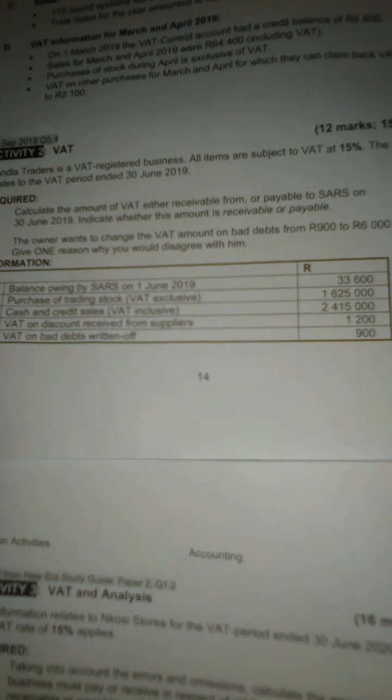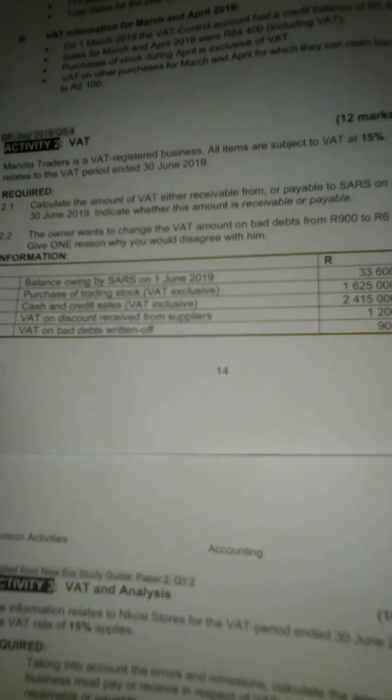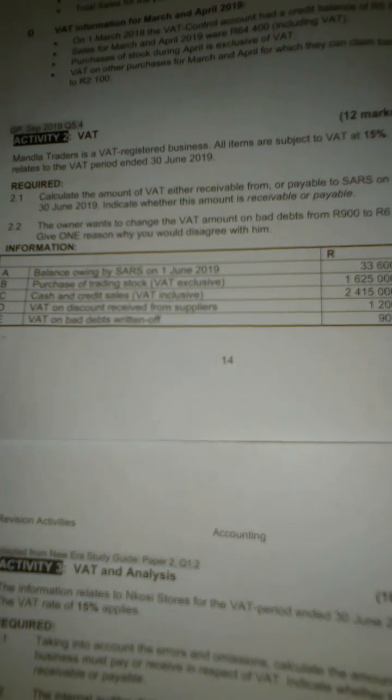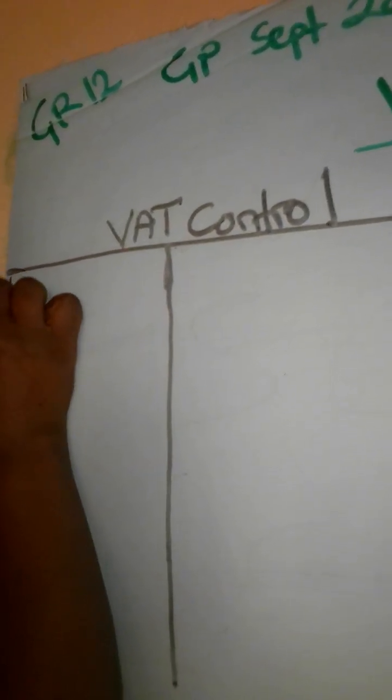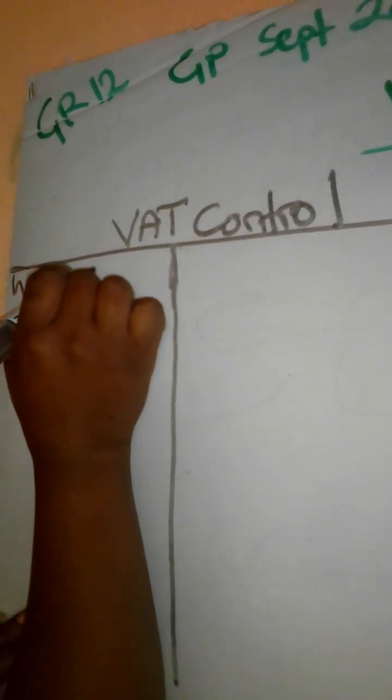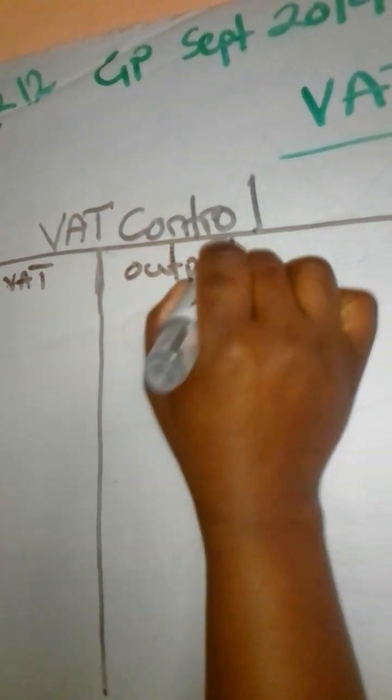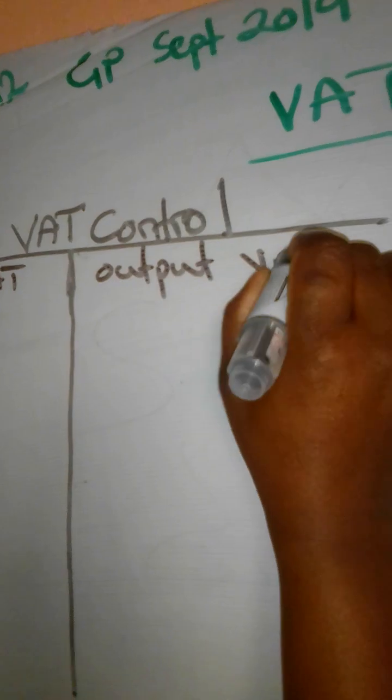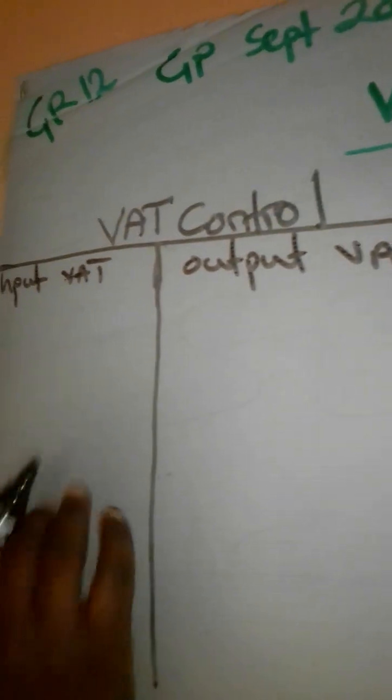The easiest way to make this calculation is to open up a VAT controller account. In the VAT controller account, you are supposed to record output VAT and input VAT. Input VAT is recorded on the debit side, and on the credit side there is output VAT.